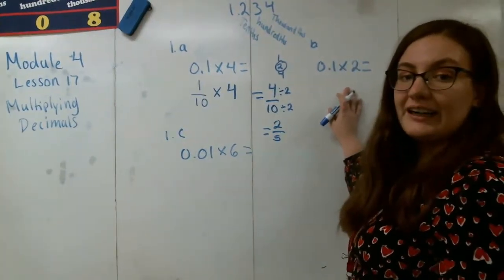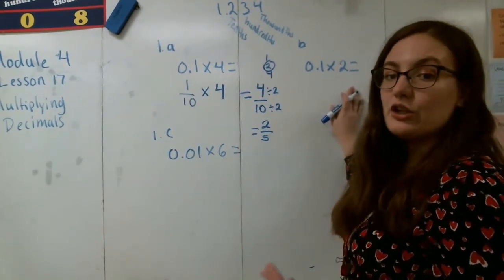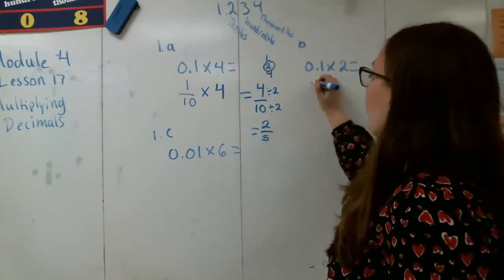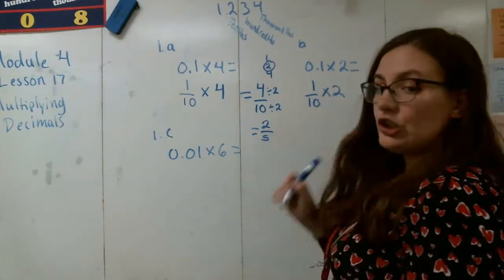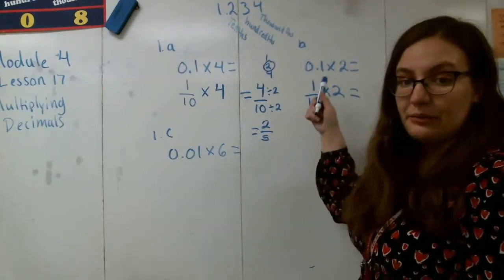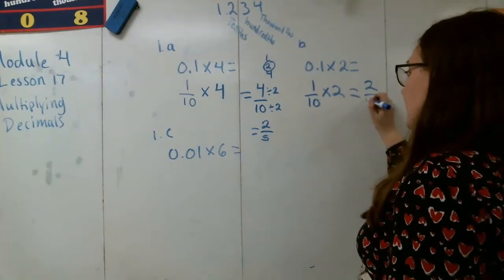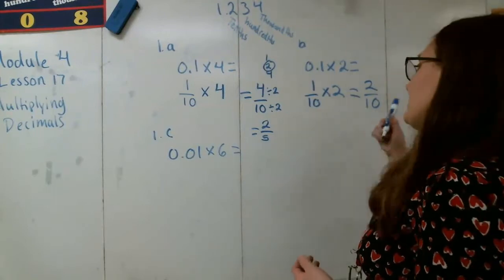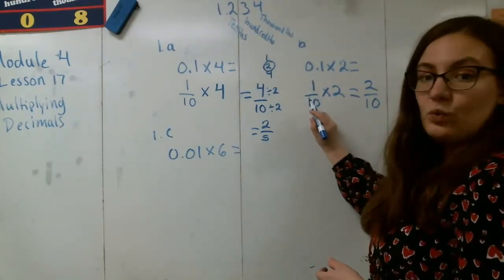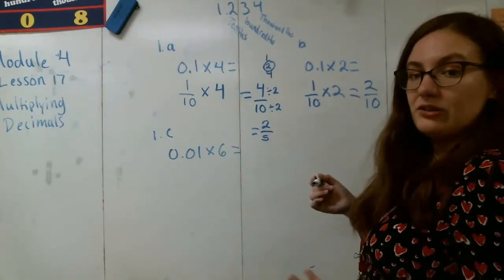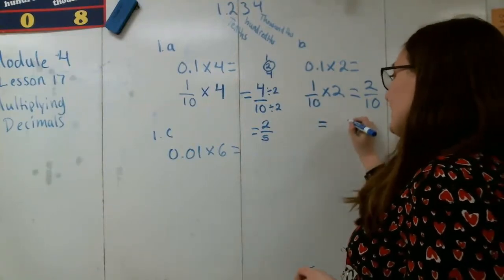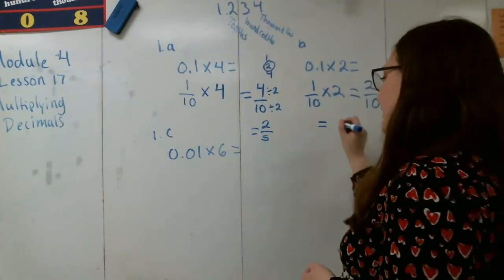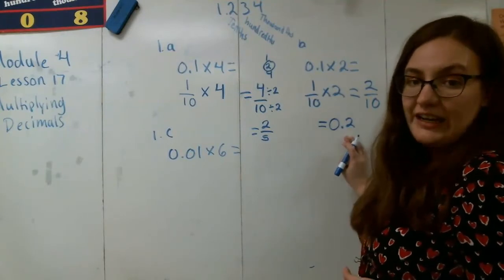Now for this problem over here what I am left with is 0.1 times 2. So for this problem what I can do is I can again write 0.1 as 1 over 10 times 2. And then again this is just like the problem we just did. We do 1 times 2 which gives 2. And then 10 times that invisible number 1 which gives me 2 tenths. Now another way that I can look at my answers is I can think of this as 2 tenths. Just like how I thought of this as 1 tenth I can look at this as 2 tenths. And I should be able to write 2 tenths as a decimal. So I think about if I have 2 tenths then that means that that 2 needs to be in the tenths place. So I put my decimal right here and then I'll fill in a zero just so my number looks good. And I'm left with 0.2 as my final answer.